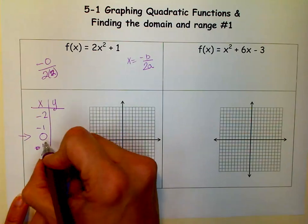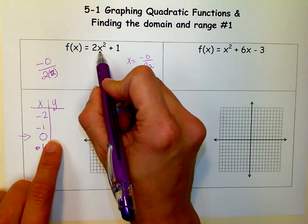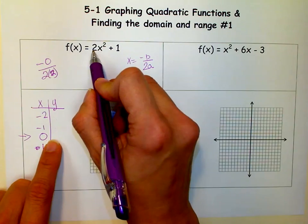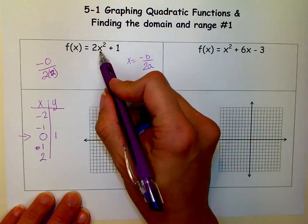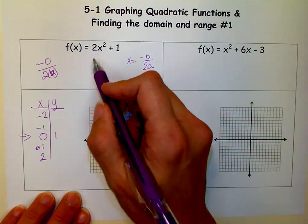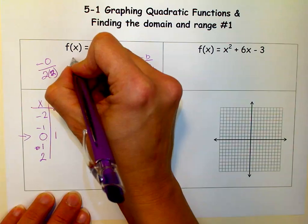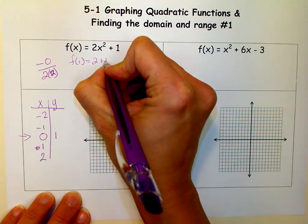So, then we start plugging numbers in. If I plug a 0 in right here for x, I want to see what y is. So, 0 times 2 is 0, plus 1 is 1. If I put a 1 in here, 1-squared is 1 times 2 is 2. So when I put a 1 in, f of 1, I get 2 plus 1, which is 3.